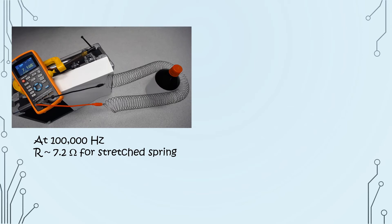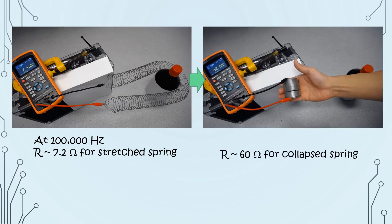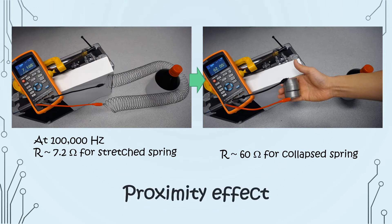Now we understand that the resistance of the wire depends on how the current is distributed within it. Then why does the resistance increase further if I let the spring collapse? This is known as proximity effect, and happens when the wires are close to each other.